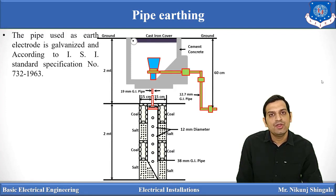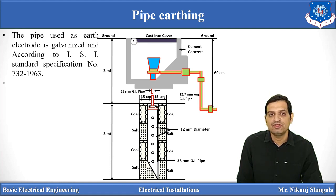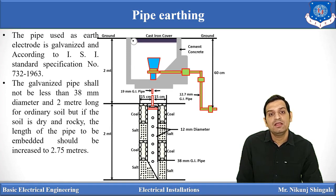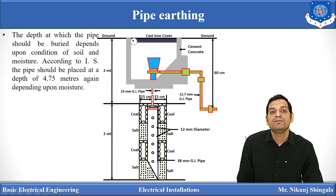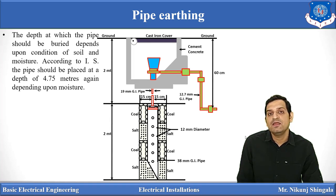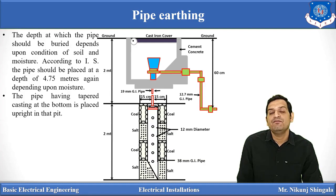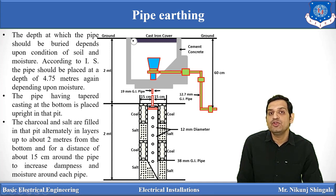Regarding the standards to be followed: the pipe used as an earth electrode should be of galvanized material per ISI standard 732-963. The galvanized pipe should not be less than 30 mm diameter for ordinary soil, but if the soil is dry and rocky, the pipe length can be increased up to 2.75 meters. The depth at which the pipe is buried depends on soil conditions; per ISI standard, the pipe should be placed at 4.75 meters, depending on moisture. The pipe with tapered casting at the bottom is placed vertically in the pit. Charcoal and salt in alternating layers of 15 cm by 15 cm are filled around the galvanized iron pipe.